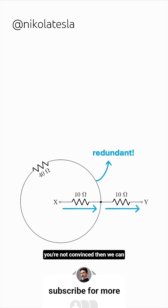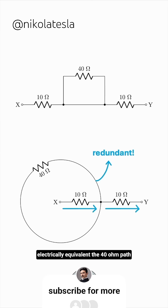If you're not convinced, then we can redraw this circuit like this. It's electrically equivalent. The 40-ohm path can be drawn as a circle, as a rectangle, as a triangle. For all we care, this is electrically equivalent.